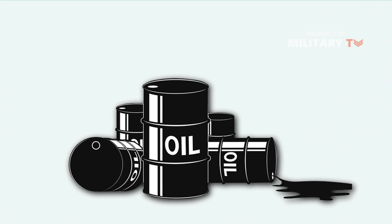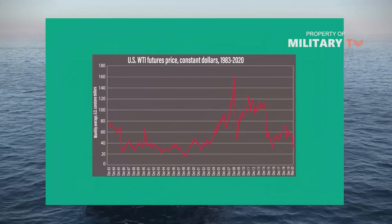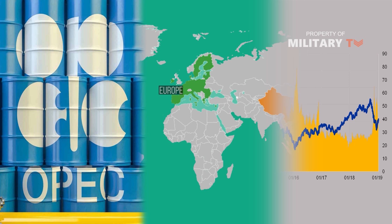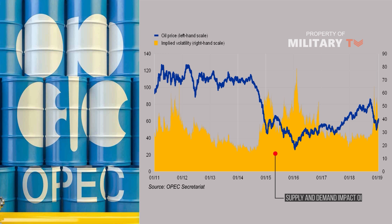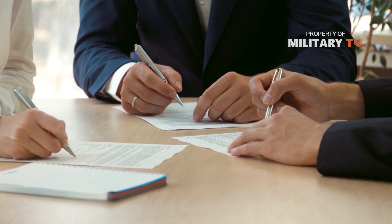Demand refers to the amount of a product consumers want and are willing to pay for. Supply refers to how much of a product is available. The relationship between supply and demand affects all commodity prices, including oil. The dramatic drop in oil prices in 2014 has been attributed to lower demand for oil in Europe and China coupled with a steady supply from OPEC, causing oil prices to fall sharply. While supply and demand impact oil prices, it is actually oil futures that set the price. A futures contract for oil is a binding agreement that gives the buyer the right to buy a barrel of oil at a set price in the future, with both buyer and seller required to complete the transaction on a specific date.